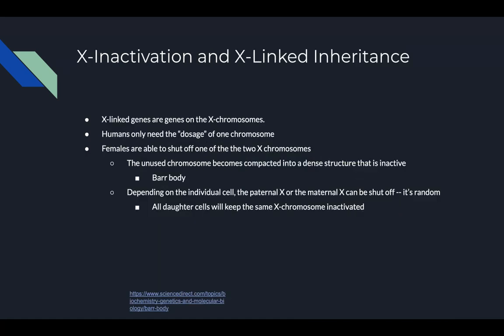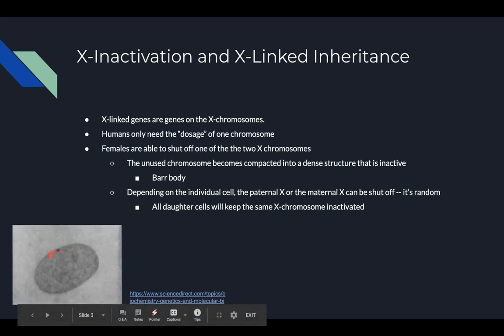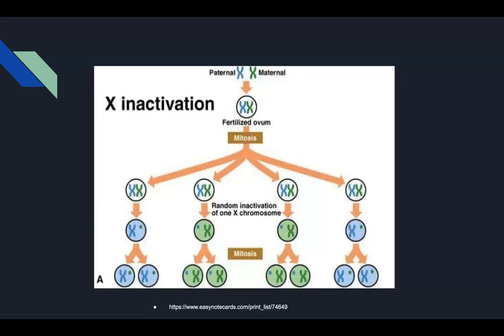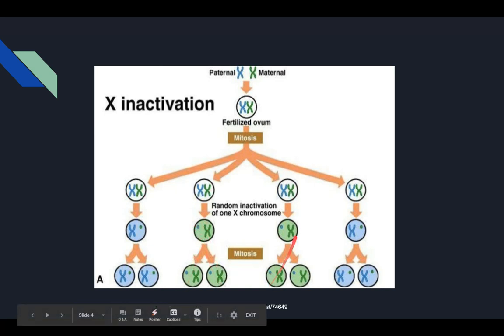Now for the relationship between inactivation and X-linked inheritance. X-linked genes are passed on the X chromosome and are inherited differently in males and females due to the differing amount of X chromosomes. Humans only need the dosage of one X chromosome, so females can turn one off. The one that is turned off becomes inactive and condenses into a Barr body, which is represented right here. Which X chromosome is turned off is random depending on each individual cell. However, all progeny cells will keep the same one inactivated. The chart shows how an X randomly becomes inactive and turns into a Barr body, and how each progeny cell has the same X chromosome turned off in each case.